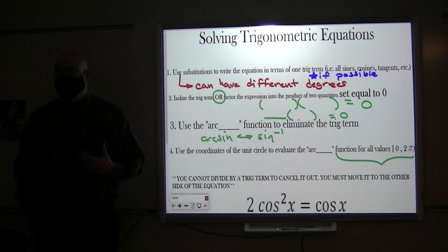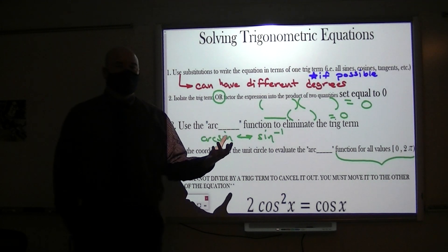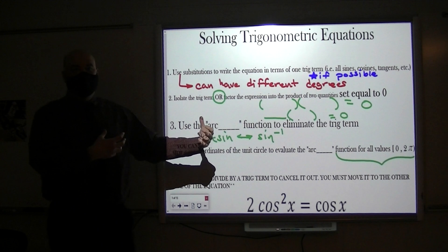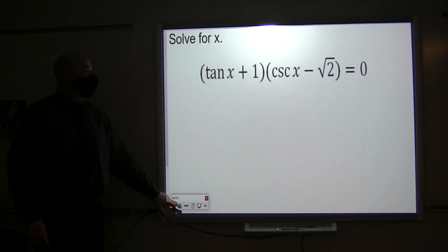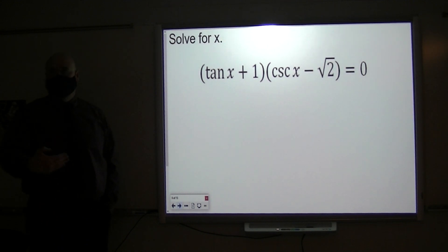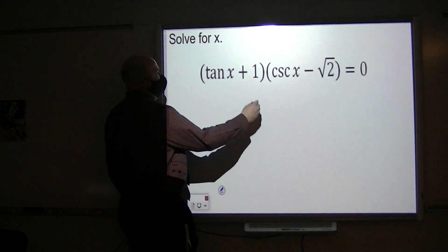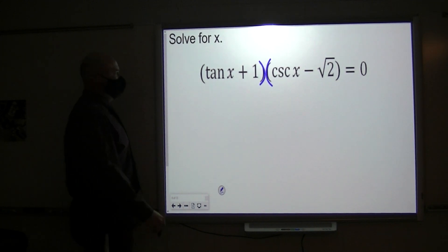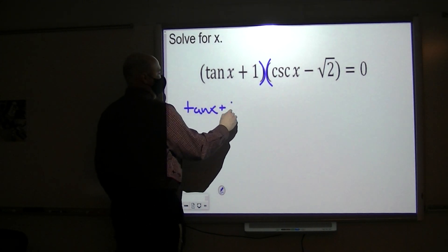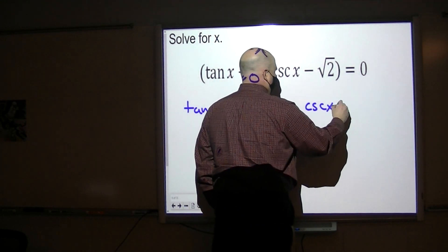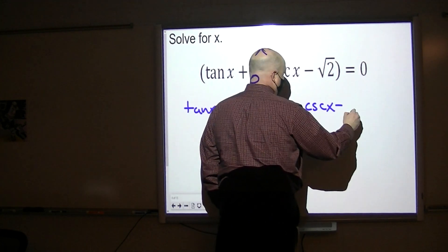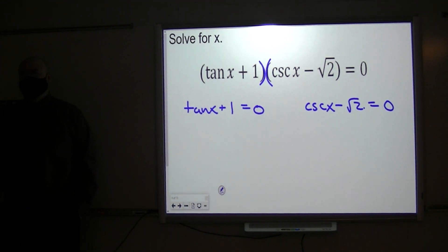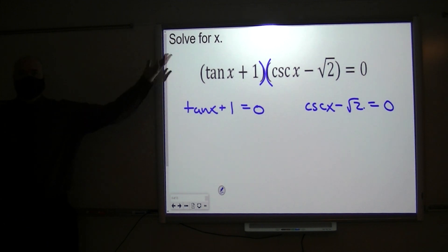The zero product property is what we did back in unit two when we were finding the zeros of polynomial functions, and we would factor, factor, factor. Then we'd pull each factor away and say each one of these could be zero. That's the zero product property. So, this problem is set up for that right now. What we have at the beginning of this problem is two quantities where the product is equal to zero. So that must mean this binomial could be zero, or this binomial could equal zero. Did everybody see that? Now we're just solving two equations.